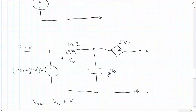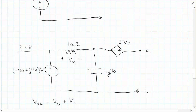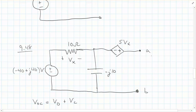First off, we want to recognize the fact that I've got this dependent power supply. Because of that, I'm not going to be able to simply find the open circuit voltage or short circuit current and then turn off power supplies in order to find Z equivalent. I'm going to have to find Z equivalent by finding both the open circuit voltage and the short circuit current and then dividing the two. So I'm going to start by finding the open circuit voltage. I will label this here V open circuit, and remember that is equal to V Thevenin.